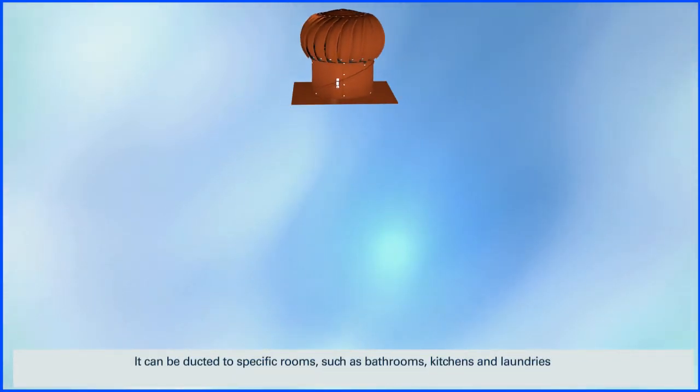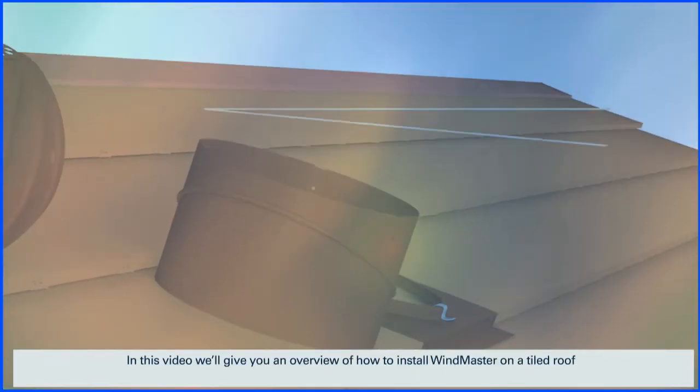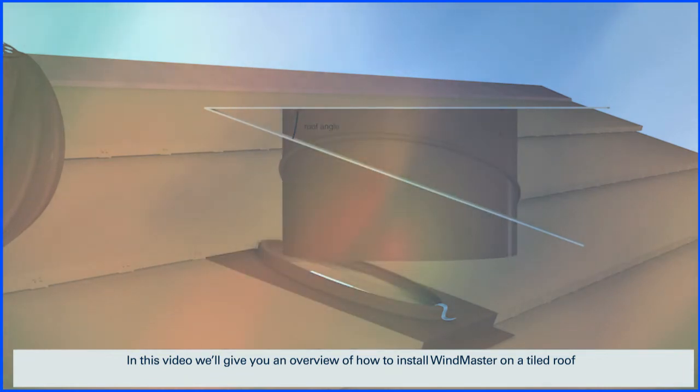It can be ducted to specific rooms such as bathrooms, kitchens, and laundries. In this video, we'll give you an overview of how to install WindMaster on a tiled roof.